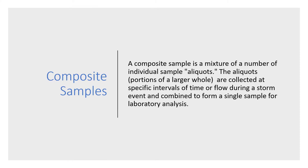Another sampling approach is to collect a composite sample. A composite sample is a mixture of a number of individual sample aliquots. The aliquots are collected at specific intervals of time or flow during a storm event and combined to form a single sample for laboratory analysis. Composite samples may be generated by combining appropriate portions of several grab samples, but this is generally impractical. Many monitoring programs have found that automated monitoring equipment and methods are more appropriate for compiling composite samples than manual monitoring.